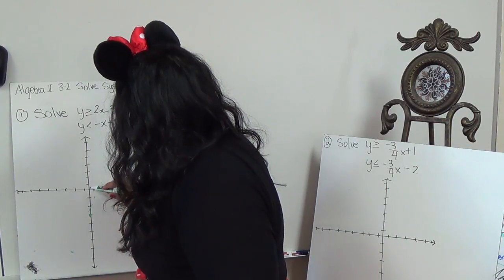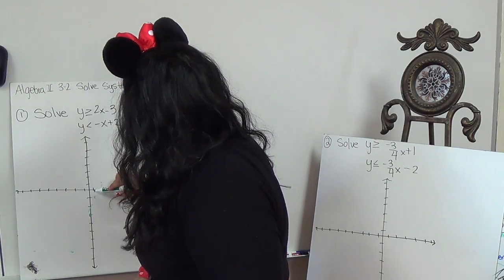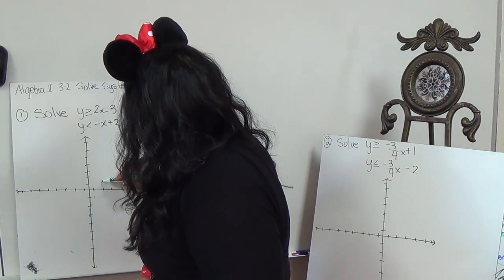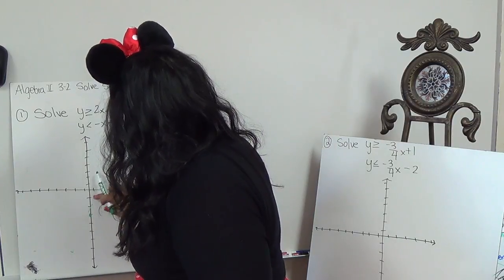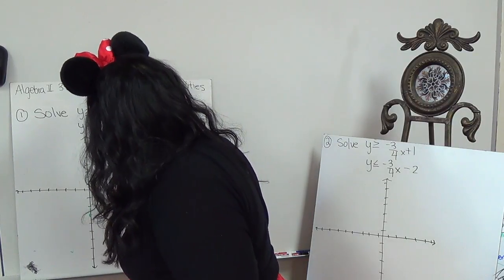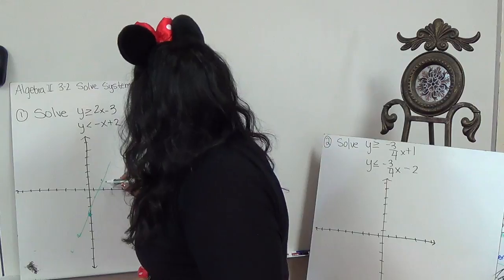It needs to look a little bit more in line. Up 2, up 2 over 1. Like this.